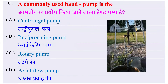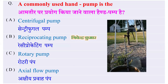A commonly used hand pump is — आमतौर पर प्रयोग किए जाने वाले hand pump निम्न में से कौन से हैं? Options: Centrifugal pump, Reciprocating pump, Rotatory pump, या Axial flow pump — and the right answer is Reciprocating pump।